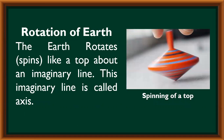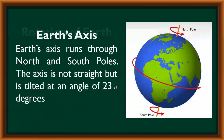Rotation of earth. The earth rotates, spinning like a top about an imaginary line. This imaginary line is called the axis. Earth's axis runs through the north and south poles. The axis is not straight but is tilted at an angle of 23½ degrees.